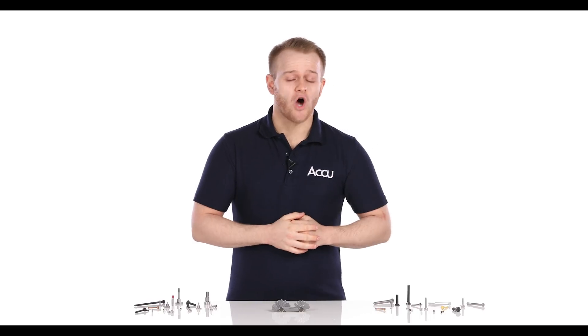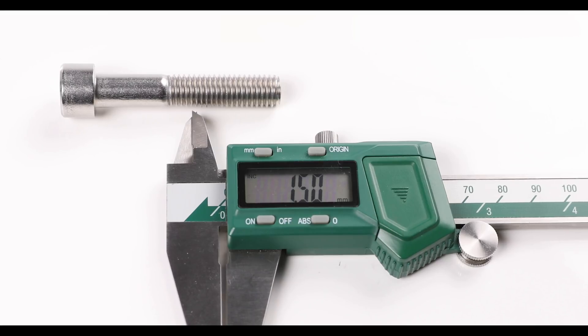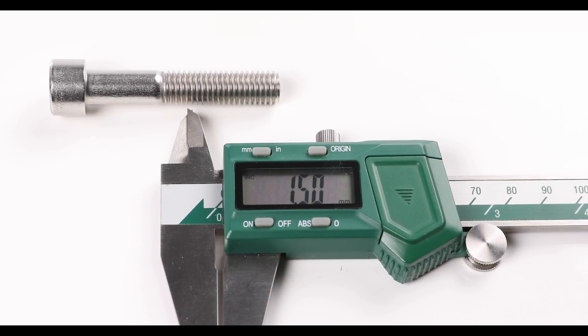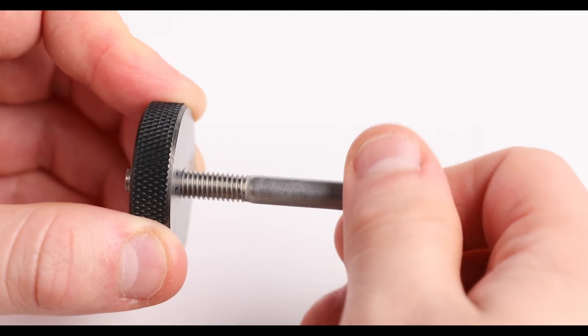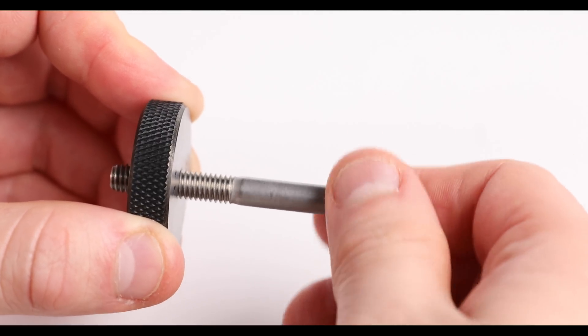However, whilst leaf gauges are inexpensive, versatile, and relatively quick and easy to use, they do have their disadvantages. Their inability to measure thread diameter, combined with the potential for human error in using them, means that they are actually less accurate than other measuring tools, like vernier calipers or a ring thread gauge, which allows you to precisely confirm both the diameter and the pitch of a screw thread at the same time, and with greater accuracy.